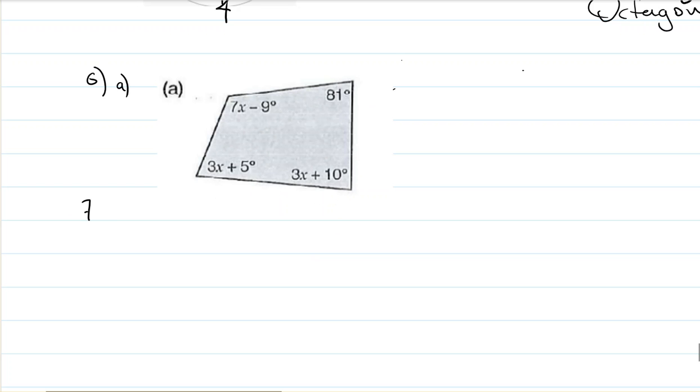So 7x minus 9, I'll put that in brackets for now so I can be clear. If I add that with 3x plus 5, and if I add that to 3x plus 10, and if I add that to 81, I should get 360 degrees. That is your first step.